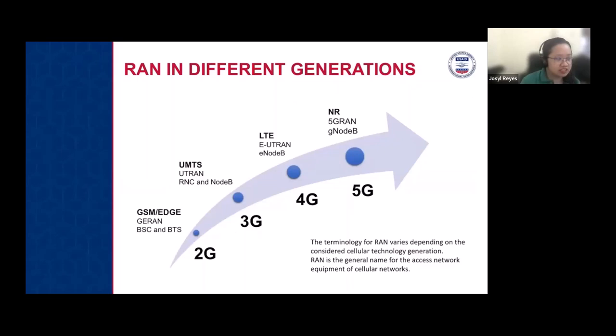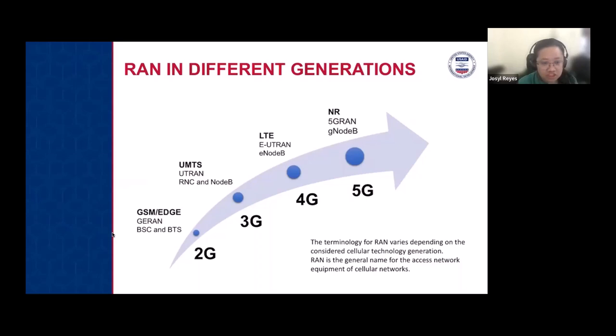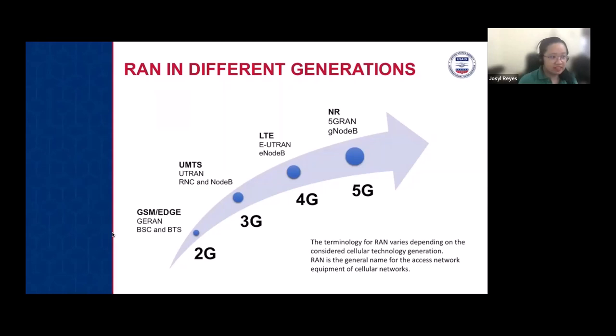There are different names for RAN across generations. In 2G, the RAN is called GERAN — GSM Edge Radio Access Network — and the components are the BSC (base station controller) and BTS (base transceiver station). In 3G we have UTRAN — Universal Terrestrial Radio Access Network — with RNC (radio network controller) and Node-B.